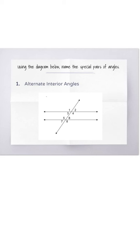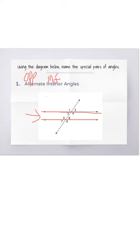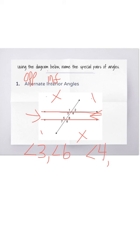Now let's test your knowledge. Let's see if you can look at the diagram below and find the special pairs of angles. Number 1: alternate interior angles. Remember that alternate means opposite and interior means inside the parallel lines. So whatever we are going to look at has to be inside the parallel lines and opposite of the transversal. It could be angles 3 and 6, or it could be angles 4 and 5.